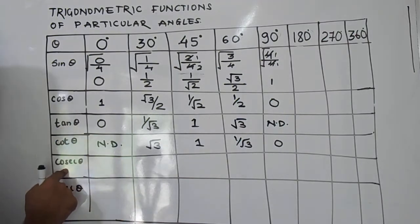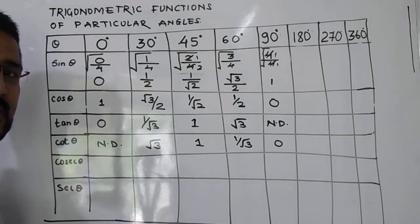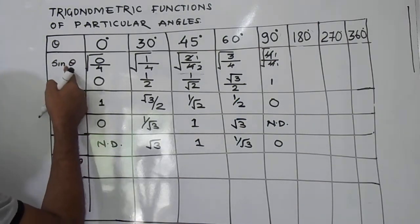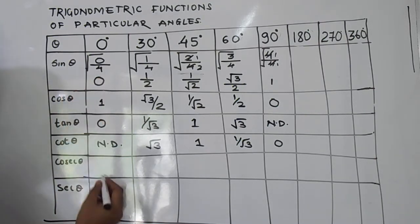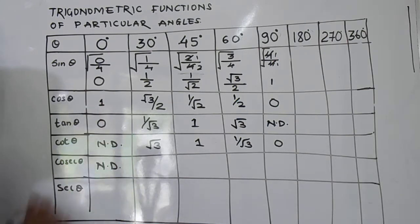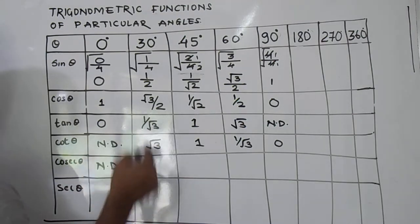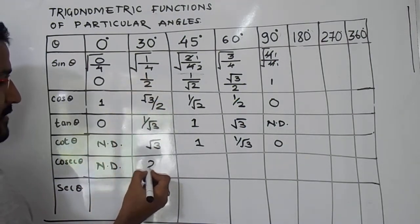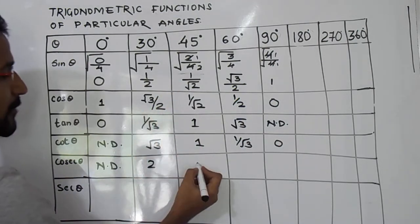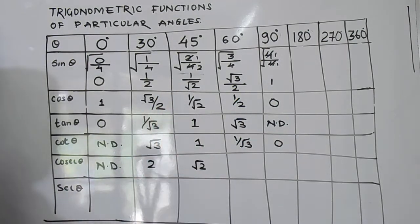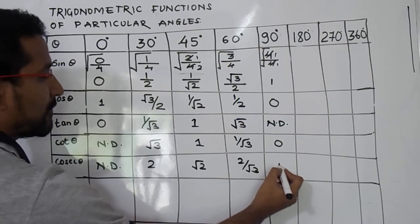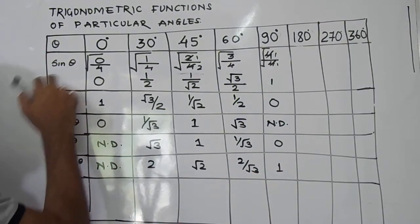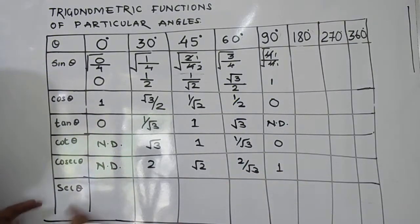Now for cosec θ — as we know, cosec θ = 1/sin θ. So the reciprocal of each sine value gives cosec θ. The reciprocal of 0 is not defined, so cosec 0° is not defined. Reciprocal of 1/2 is 2. Reciprocal of 1/√2 is √2. Reciprocal of √3/2 is 2/√3, and reciprocal of 1 is 1.